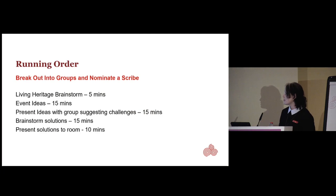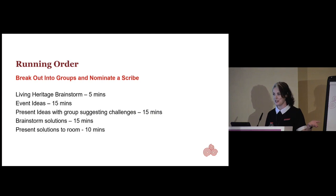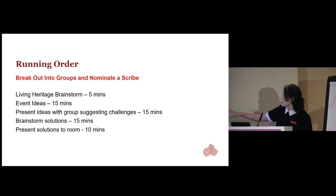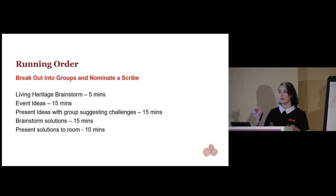So I have the running order there for you. We're going to have groups at your tables — you're already nicely split into groups. I just ask that you nominate somebody to do the writing and to be your group speaker, unaccustomed though you may be to public speaking. Then we're going to go through brainstorming what living heritage is, then we'll do event ideas. I'll go around the room with a roving mic and your speaker will present that idea to the whole group. While we're doing that, I want you to be thinking of something that could go wrong, a problem they might face, an issue that could come up — and write it on a post-it.